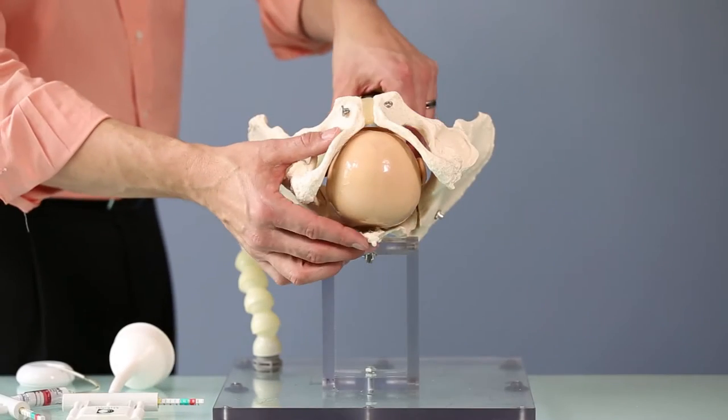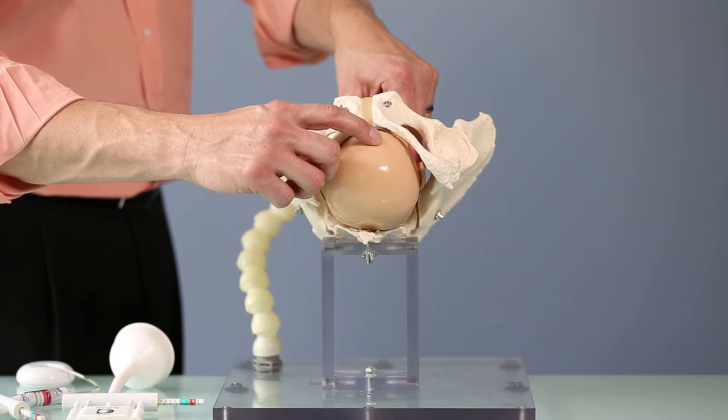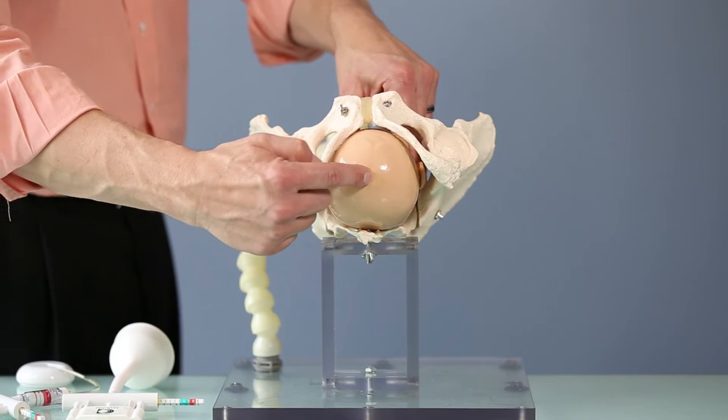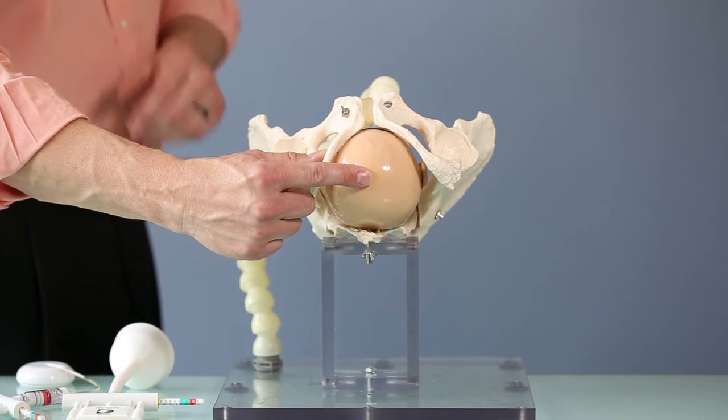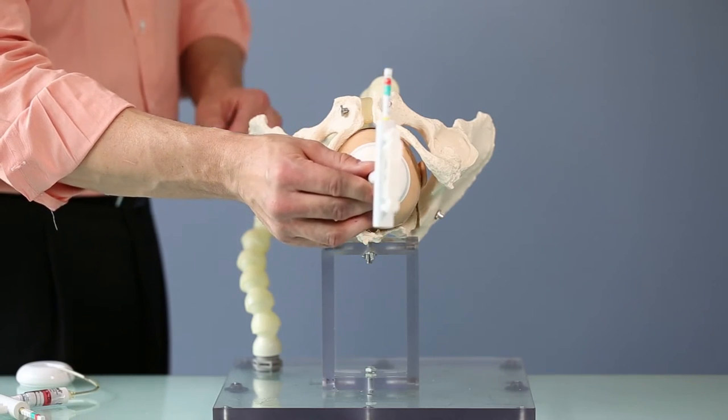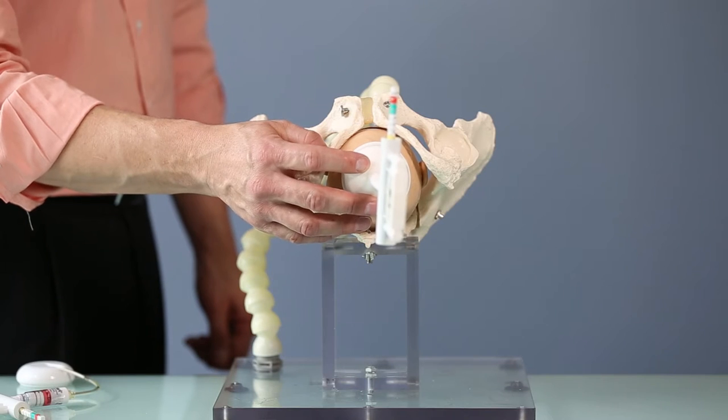If we place this baby straight occiput anterior at the outlet, the flexion point three centimeters forward of the posterior fontanelle and a long sagittal suture are essentially my presenting part. So I could take any cup on the table, rigid stemmed or not, place it on that spot and get that baby delivered with little effort.